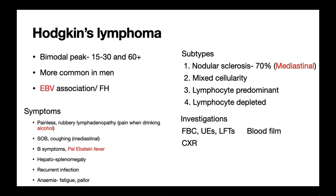A chest X-ray is useful to investigate mediastinal lymphadenopathy further, since there are several causes such as TB or sarcoidosis, and it allows examination for any lung involvement. A biopsy is important because Hodgkin's lymphoma has a characteristic cell seen under the microscope called the Reed-Sternberg cell — if present, this confirms the diagnosis. A bone marrow biopsy can also be performed to assess that process.